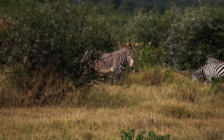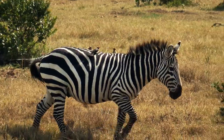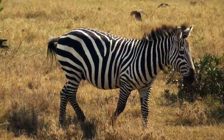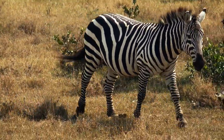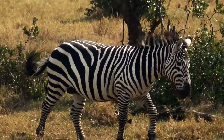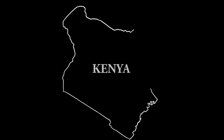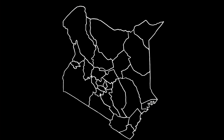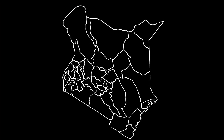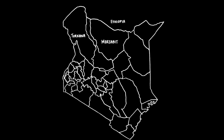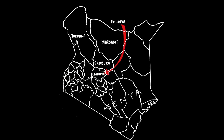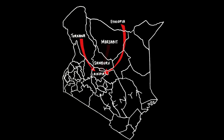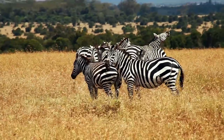Historically, the Grevies and plains zebras inhabited primarily different landscapes, with small areas of overlap. Originally adapted to the semi-arid environment of northern Africa, competition with cattle herders forced the Grevies farther south into Laikipia, a region dominated by plain zebras.